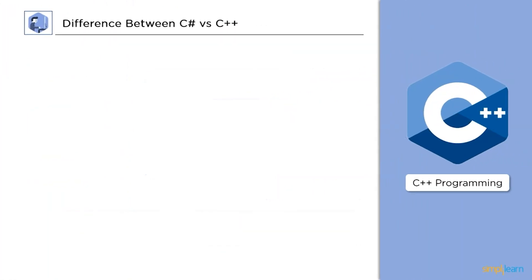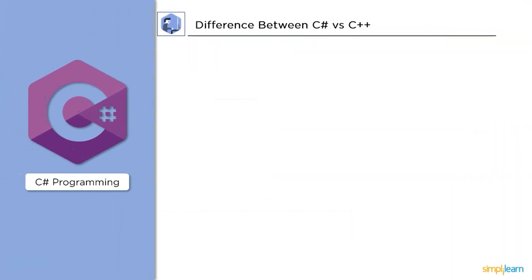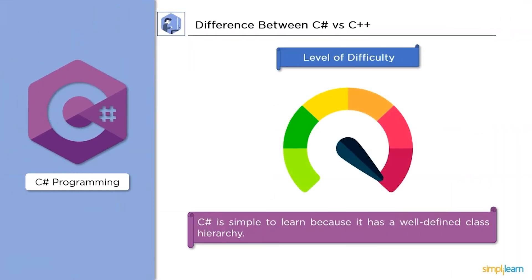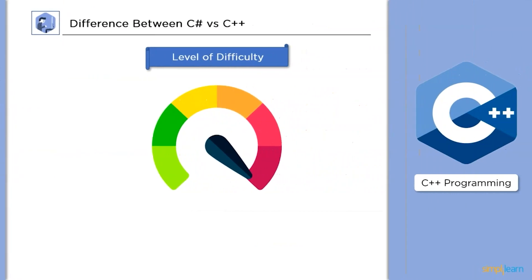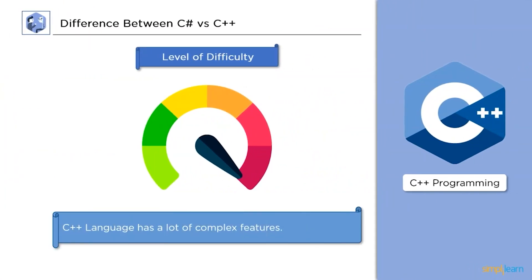After that, let's discuss the level of difficulty. There are no complex features in C Sharp. It has a simple hierarchy that is straightforward to understand. It has a rich set of library functions and data types. C++ is a programming language with many more complex features like dynamic memory allocation.